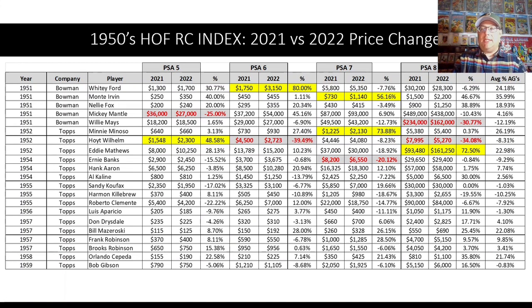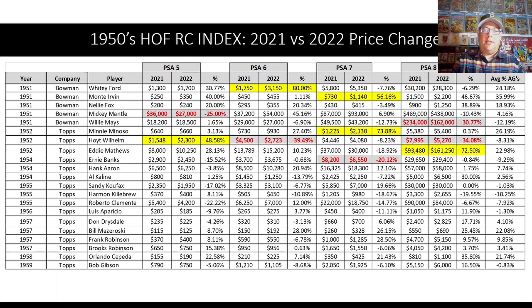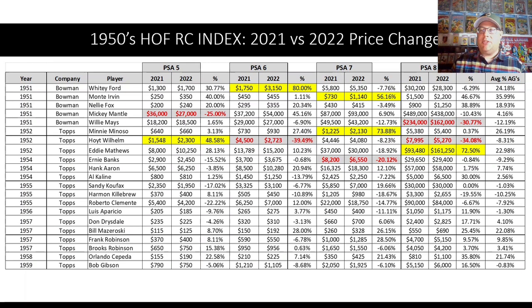Those are some cards to think about as we move into some other analysis. Here is just how everything laid out. I averaged the entire run — if you had a complete set of 5, 6, 7, and 8s for each player — to give an average gain or loss. You can pause it and look at the chart, and I'm going to move on to the next slide.